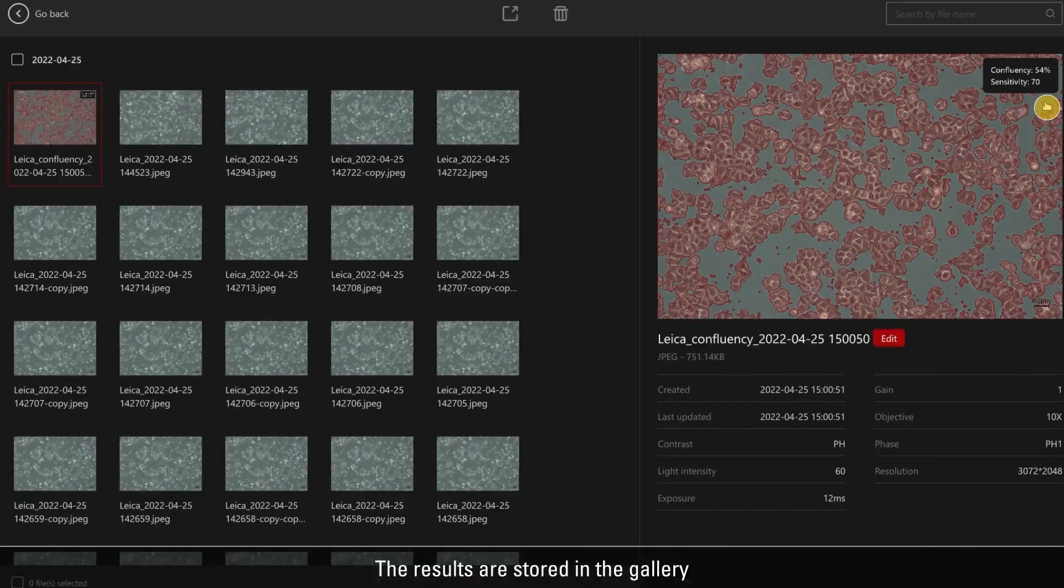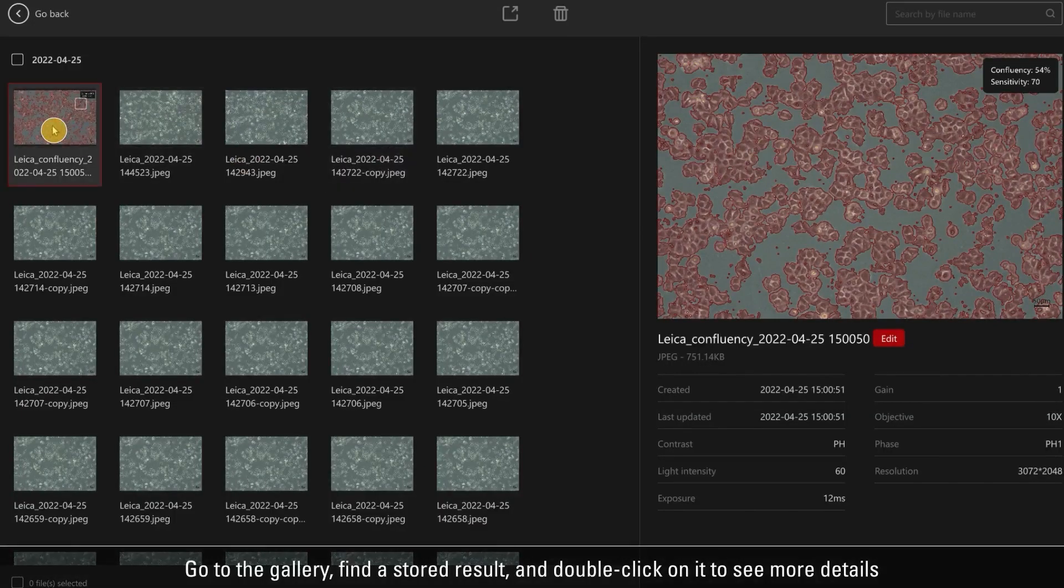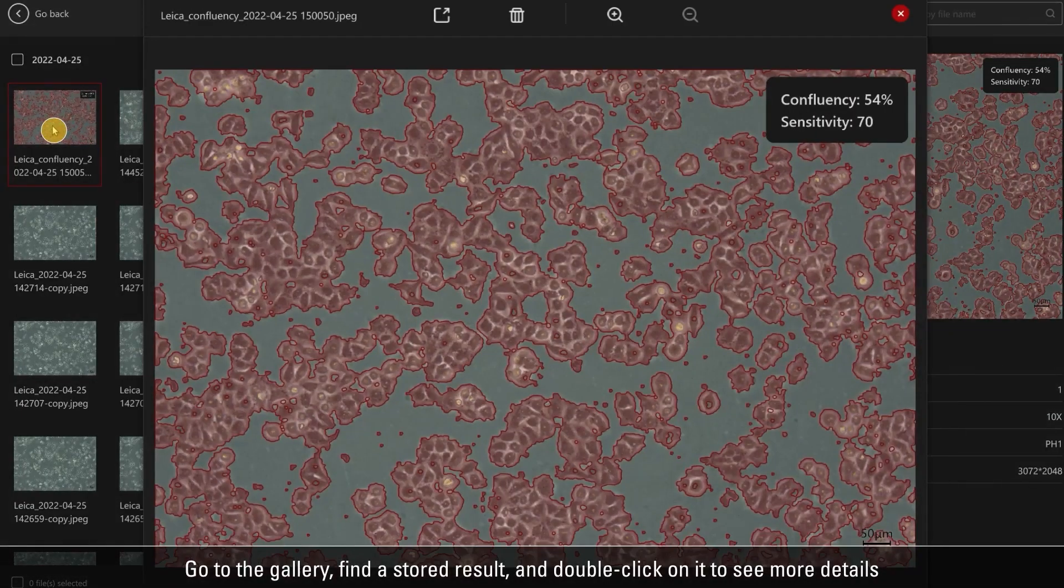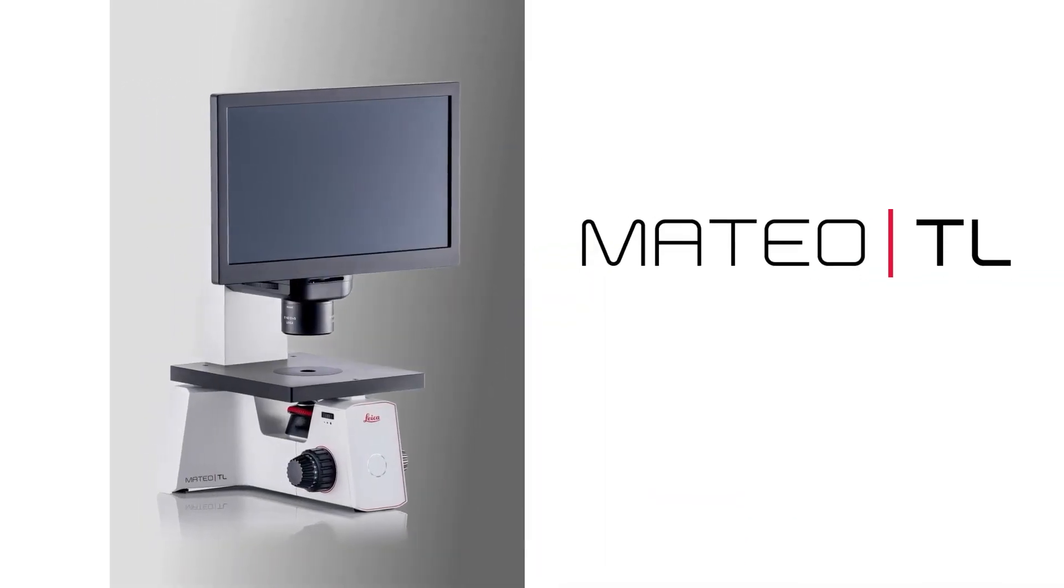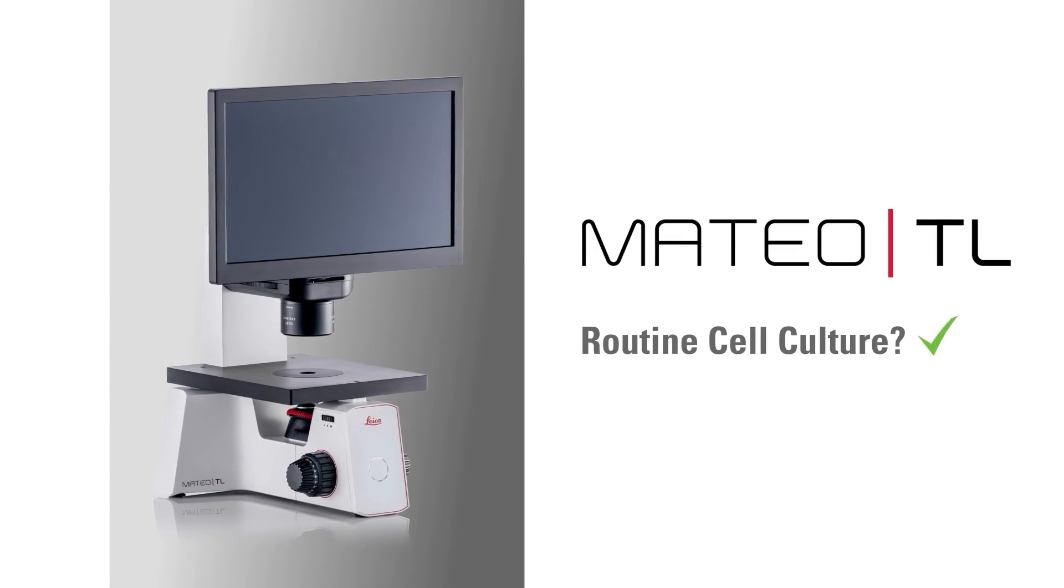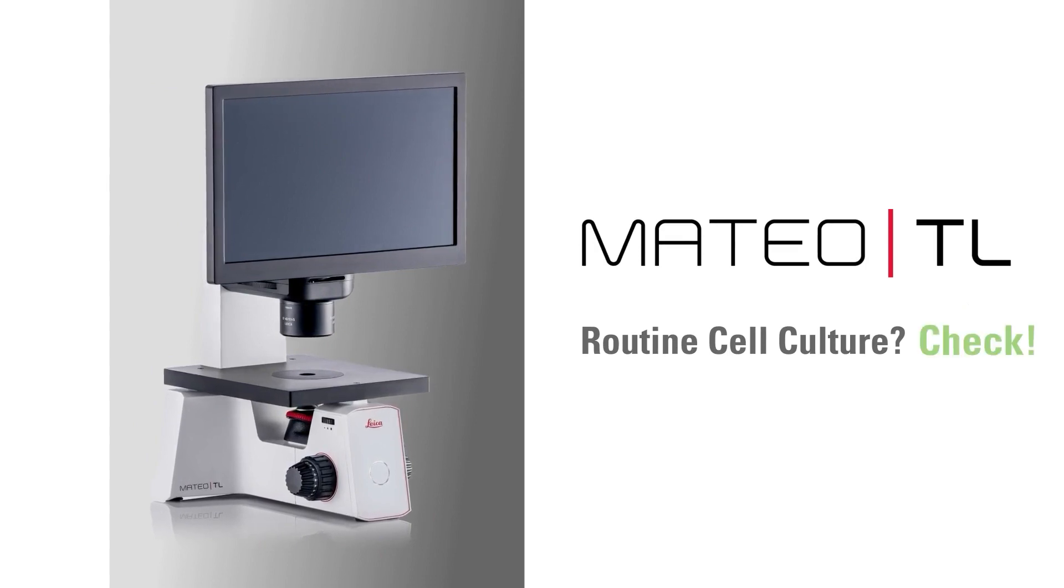The results are stored in the gallery. Go to the gallery, find a stored result, and double-click on it to see more details. Mateo TL. Routine cell culture? Check.